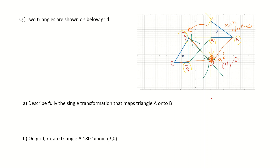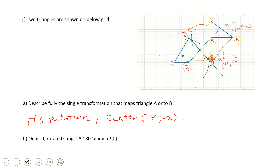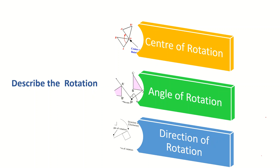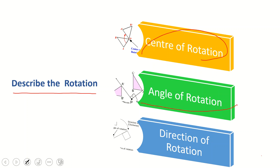Now we can write down the single transformation. It is a rotation — that's one mark. The center of rotation is (4, -2) — that's another mark. Then we state the angle of rotation and the direction of rotation to complete the full description.